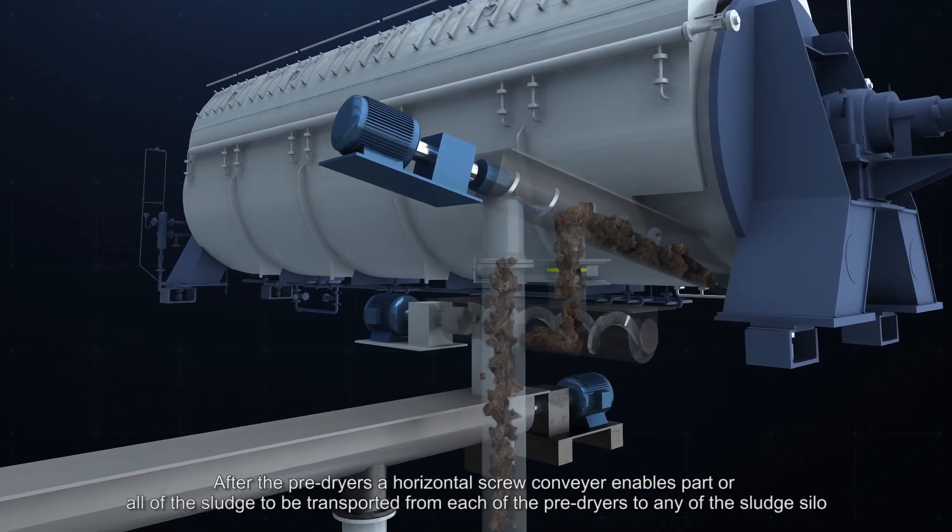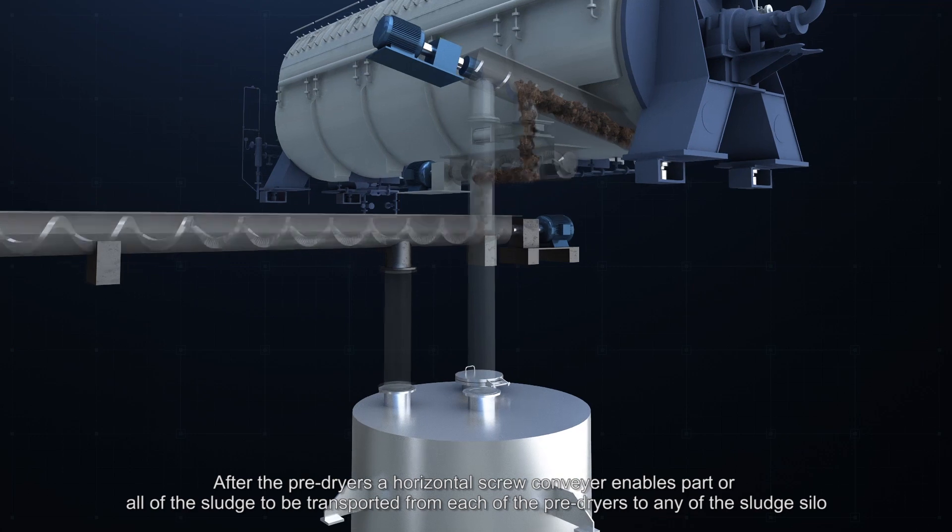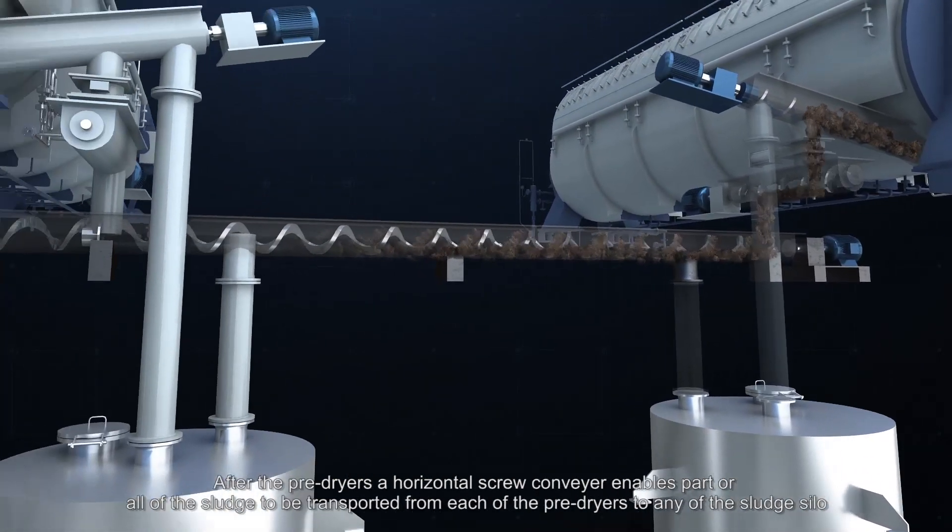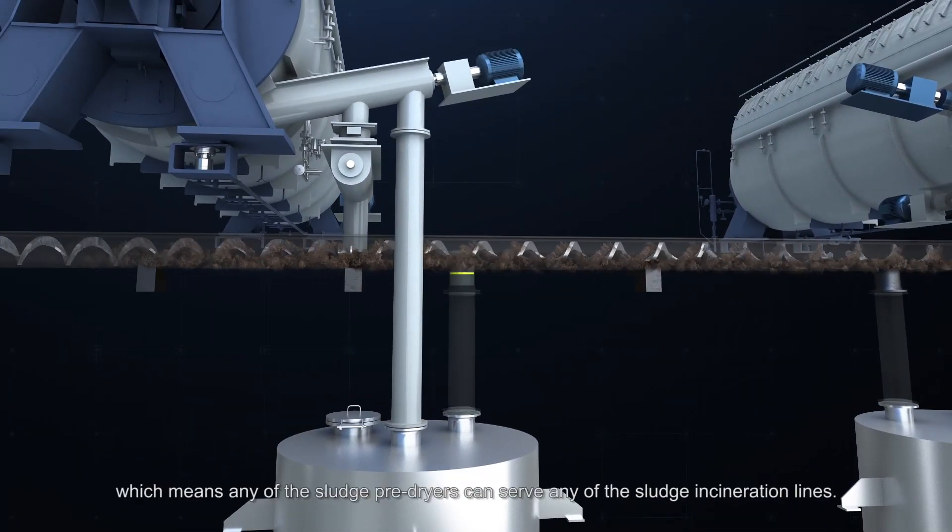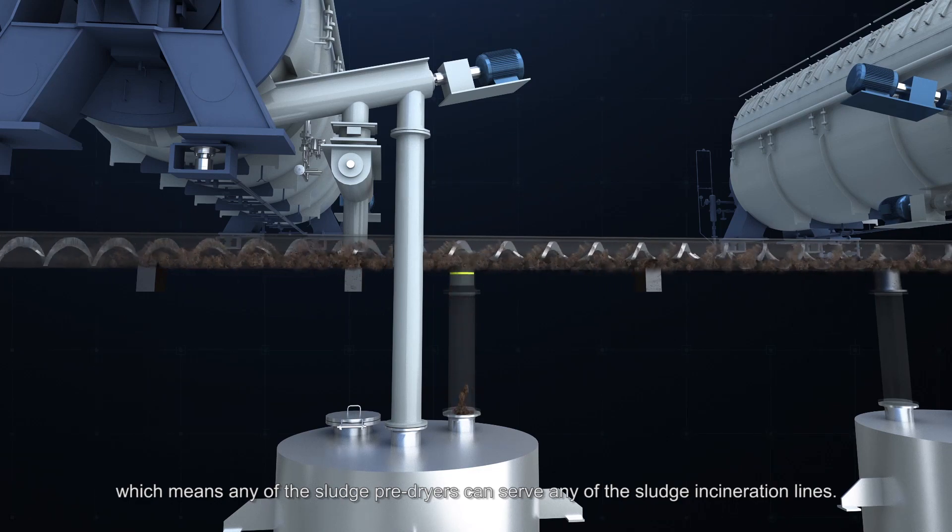After the pre-dryers, a horizontal screw conveyor enables part or all of the sludge to be transported from each of the pre-dryers to any of the sludge silo, which means any of the sludge pre-dryers can serve any of the sludge incineration lines.